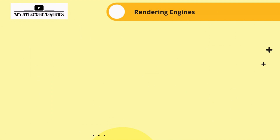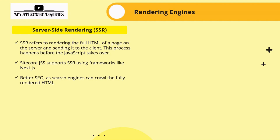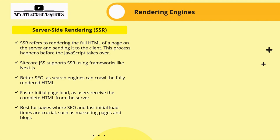The first rendering engine is server side rendering, SSR. SSR refers to rendering the full HTML of a page on the server and sending it to the client. The complete HTML is built on the server before JavaScript takes over in the browser. Sitecore JSS supports SSR using frameworks like Next.js. It is better for SEO as search engines can crawl the fully rendered HTML, and provides faster initial page load since the user receives the complete HTML from the server. SSR is best for pages where SEO and fast initial load times are crucial, such as marketing pages and blogs.